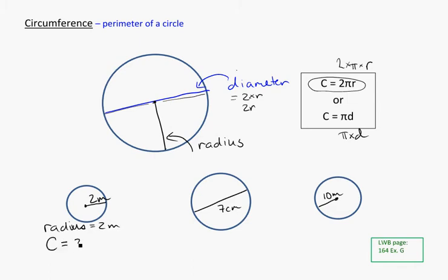So we can use the formula. The circumference is equal to 2 times pi times the radius, which is 2. Plugging it into your calculator, you should get 12.57 meters. So the distance around the circle is 12.57 meters.